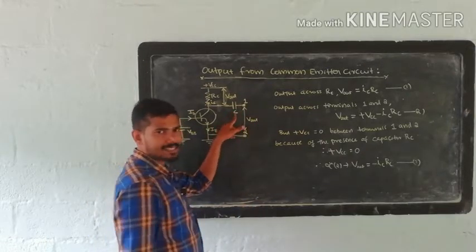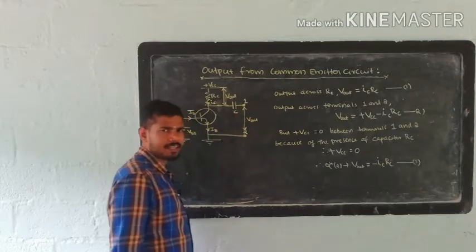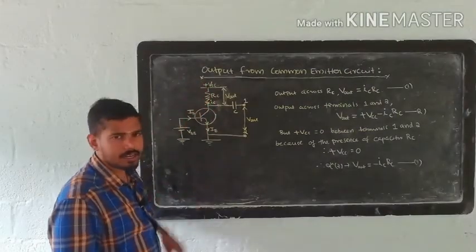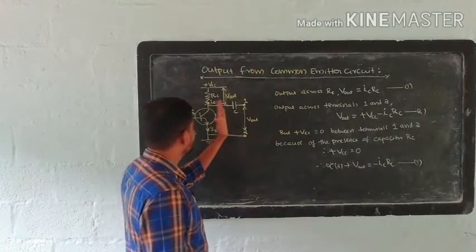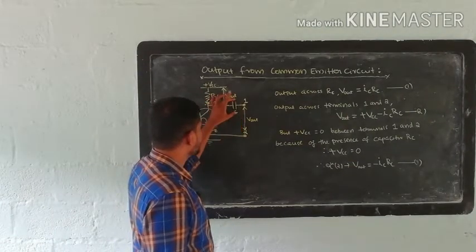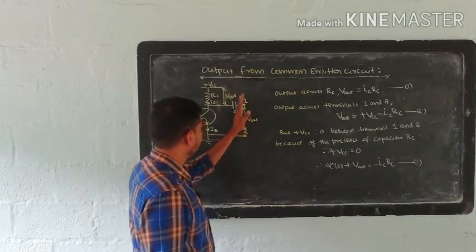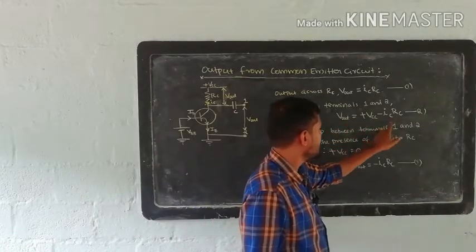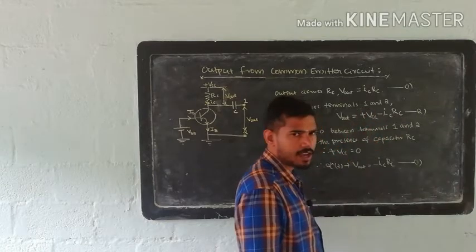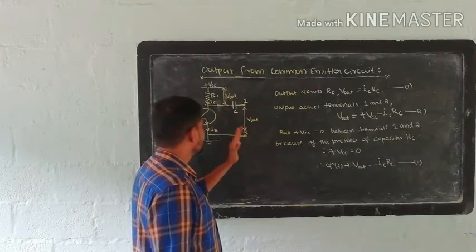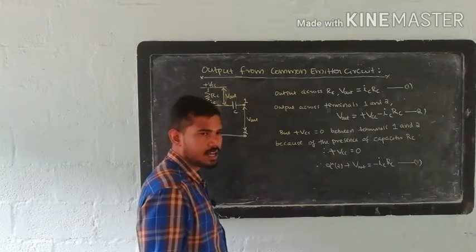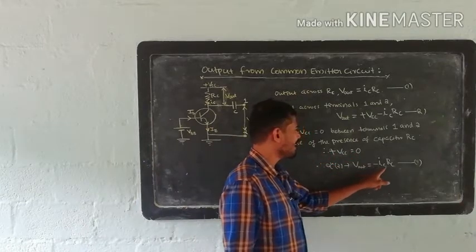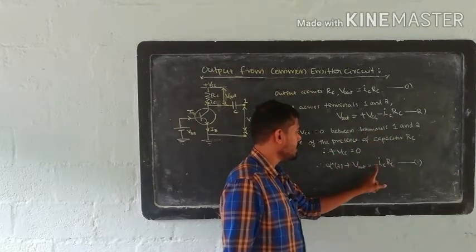We have a capacitor connected. The capacitor is a DC block. This is a DC power supply. Because the capacitor blocks DC, plus Vcc is equal to 0 across the output terminals. So from equation 2, Vout is equal to 0 minus IcRc, that is minus IcRc.